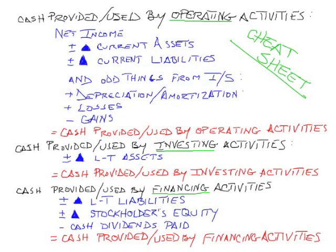The biggest section on the Statement of Cash Flows is usually the operating activities section. A good idea at this point is to freeze your screen in this video and take a screenshot of this page. Print it out as a cheat sheet and use it to work problems that are Statement of Cash Flows, because I'm going to have to delete this to move on. You have a second to freeze the screen and print it out.